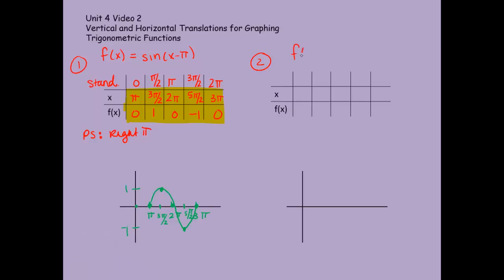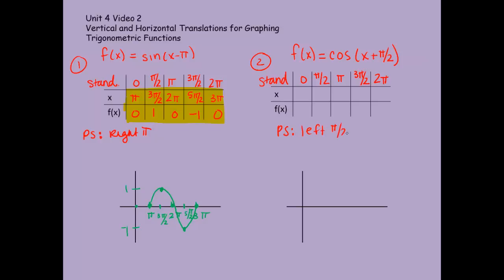Let's try the next one. I'm going to do a cosine graph: f of x equals the cosine of x plus pi over 2. Across the top I'll write my standard values — 0, pi over 2, pi, 3 pi over 2, and 2 pi. That's what it is for sine and cosine. But now with my phase shift, I'm moving left pi over 2, which means I'm subtracting pi over 2 from all of these values.